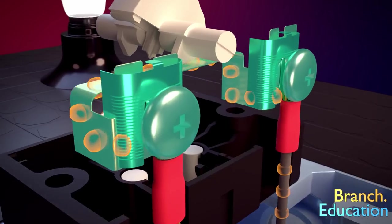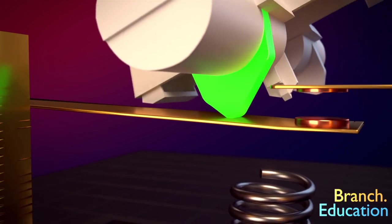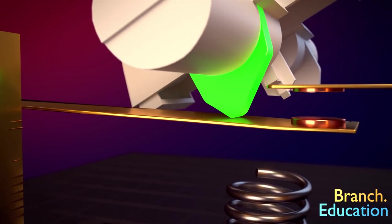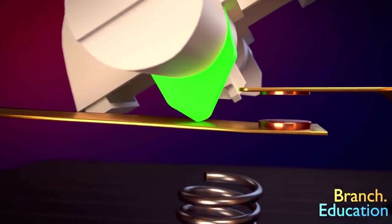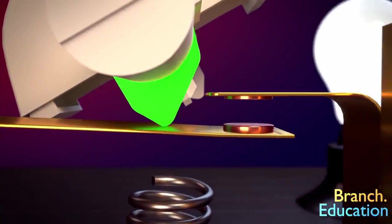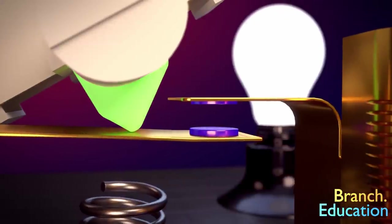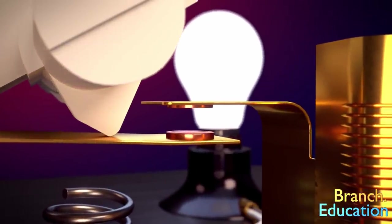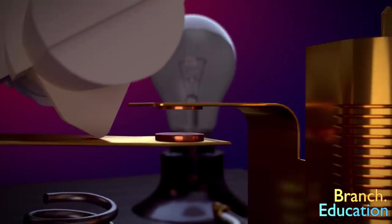However, when the toggle is flipped off, the plastic leg at the bottom of the toggle switch presses against the metal contact bar and separates the electrical contacts, thus disrupting the flow of electricity, opening the circuit and turning off the light.